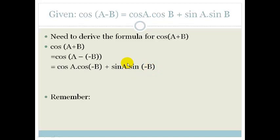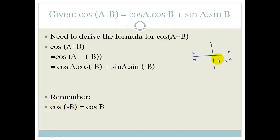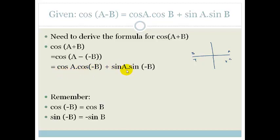We need to remember that cos(-B) = cos B. We get that using our CAST diagram — cos(-B) is in the fourth quadrant, and cos is positive there, so cos(-B) = cos B. And sin(-B) = -sin B, again because negative B is in the fourth quadrant and sin is negative in the fourth quadrant.